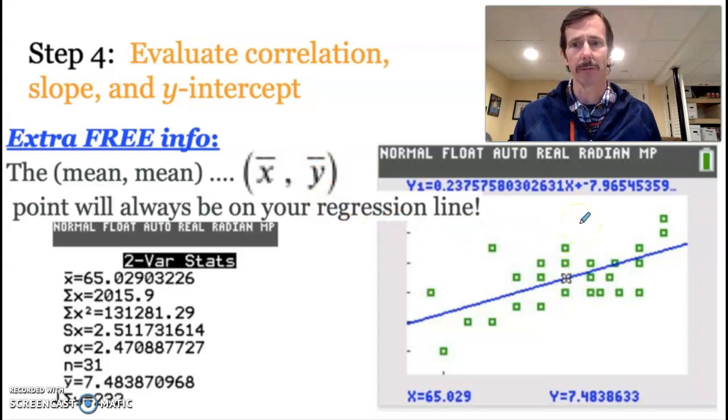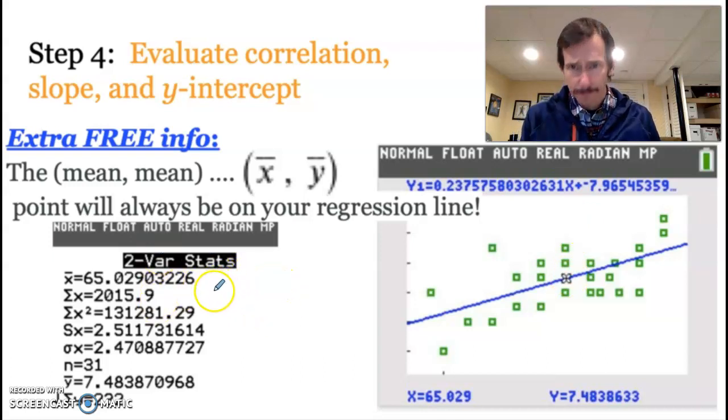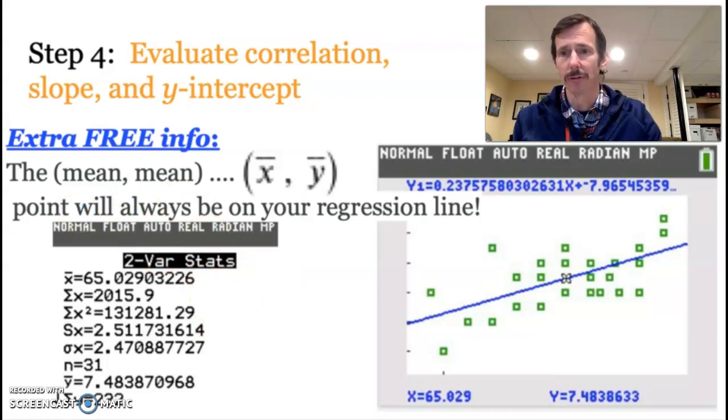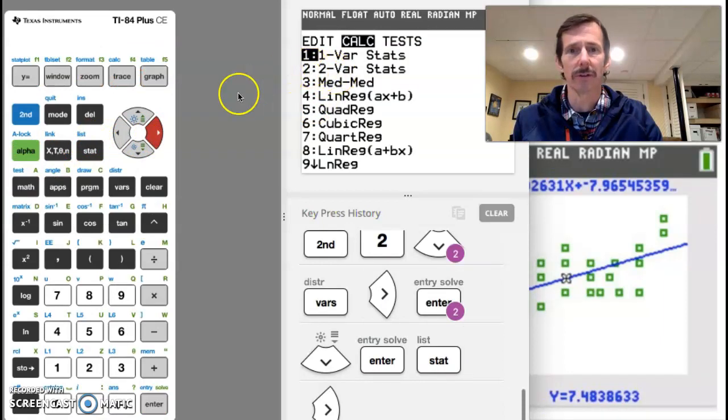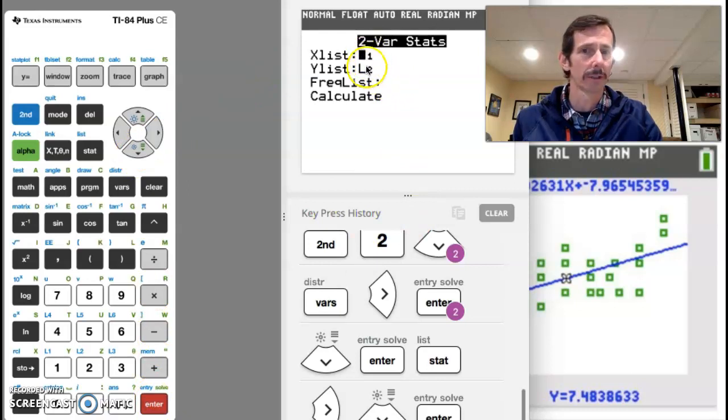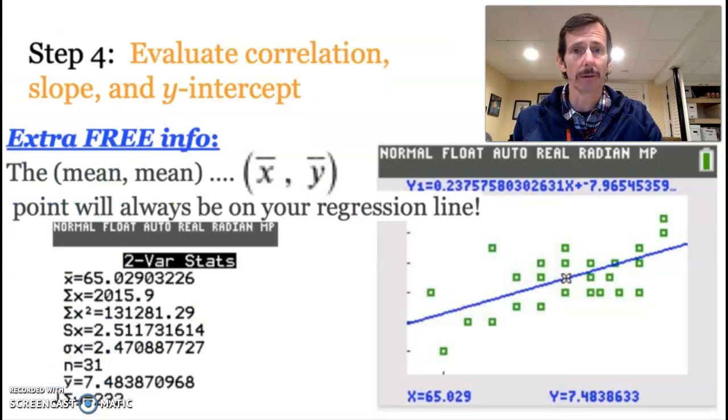And I ran two variable stats to show you I wasn't lying. And you can do two variable stats in your calculator. If you go to stat calculate, you'll notice that it's two variable stats is right below one variable stats. And you just put in the two different lists that you're running, and it will calculate both sets of values for your two variables. So my x bar was my height, 65.029, and my y bar is the average for the shoe size, which is 7.48.